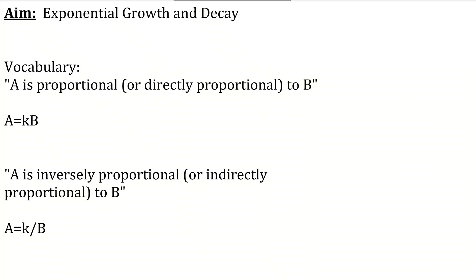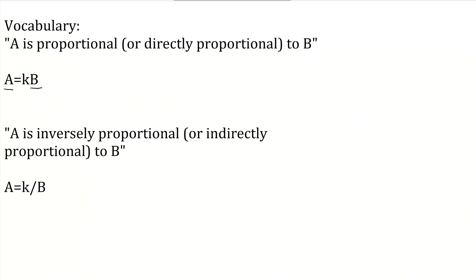So we have this phrase: A is proportional, or directly proportional, to B. All that means mathematically is that the value A is equal to some constant K times that value B. Similarly, if you hear that A is inversely proportional or indirectly proportional to B, mathematically all that means is that A is equal to K divided by B. You'll be seeing those terms today.